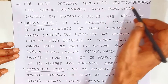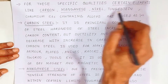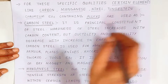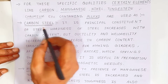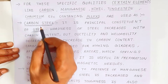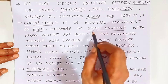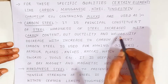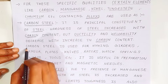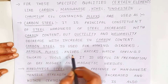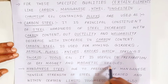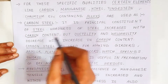Ferrous alloys are also classified depending on certain elements such as carbon, manganese, nickel, tungsten, and chromium. Carbon steel: carbon is the principal constituent. Hardness of steel increases with carbon content, but ductility and weldability decrease with increasing carbon content. Carbon steel is used for making girders, armor plates, knives, razors, watch springs, swords, and tools. It is also useful in preparation of bar magnets and magnetic needles.